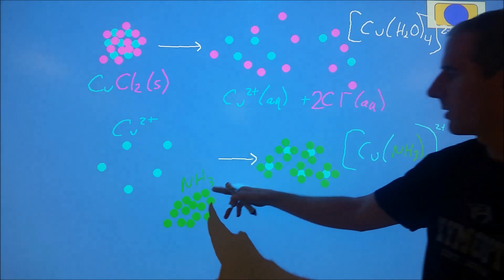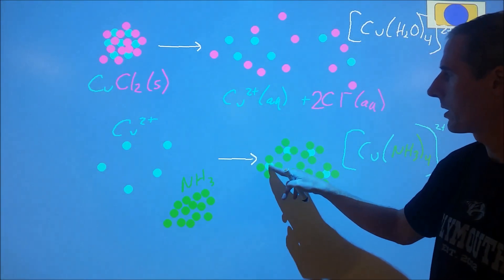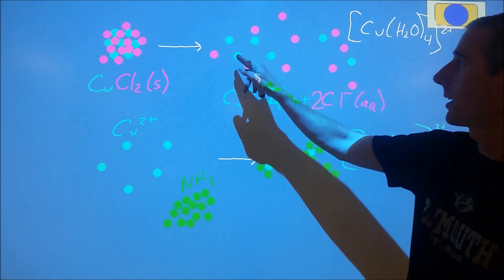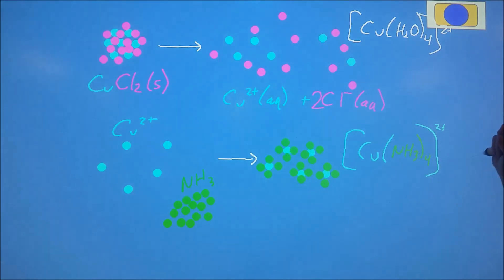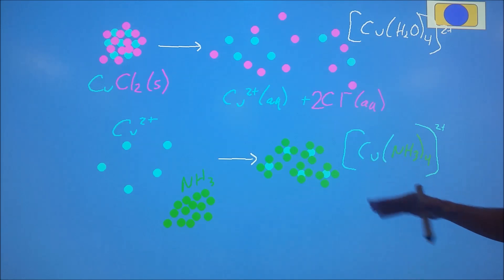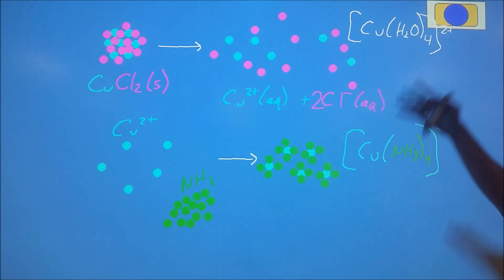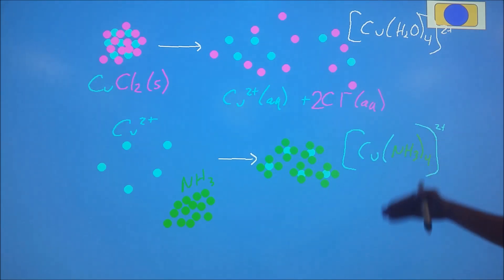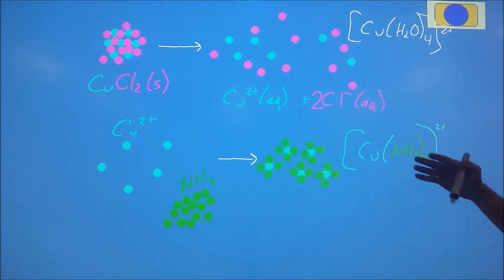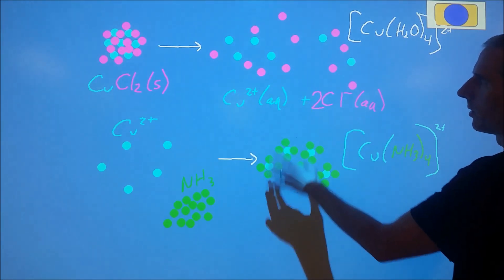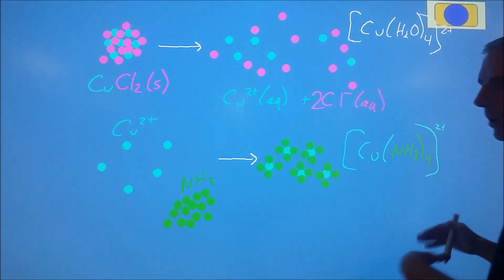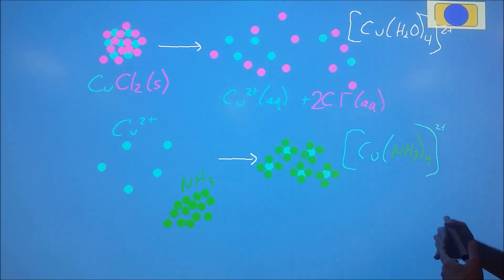This is the electrons on the nitrogen in the ammonia interacting with the copper; this is the electrons on the oxygen in the water interacting with the copper. The electronic process between them is identical. What would be better is to actually look at what's happening at the electronic level — the particle changes and the energy changes — rather than trying to characterize one as physical and one as chemical. We get nothing out of that assignment.